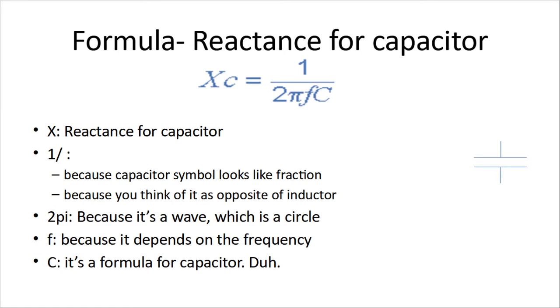Now, the reactance for a capacitor is the reverse. So again, we're the opposite. So you just flip it. We have 2 pi because it's a wave and a circle. We have F for frequency. And we have C, which is the value of the capacitor in farads.